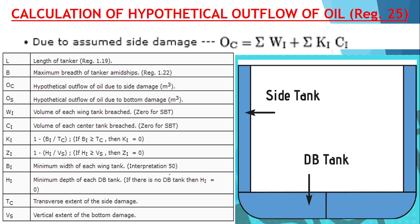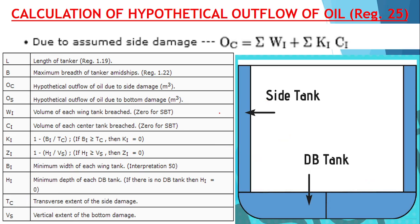Understanding these damage extents is important because whenever you calculate the hypothetical oil flow, you must consider all of them. Hypothetical outflow of oil means: if your ship suffers a side damage or a bottom damage, how much oil will flow overboard? That amount is calculated using the hypothetical oil flow formula, which is based on both side damage and bottom damage.